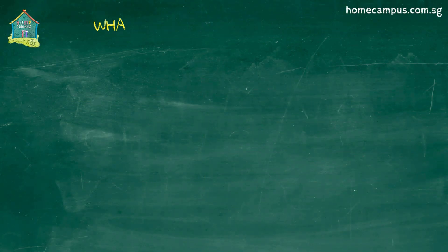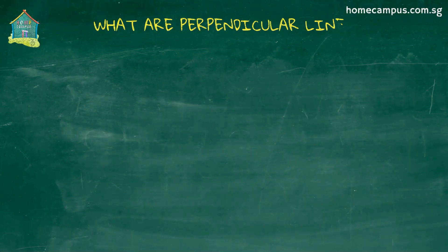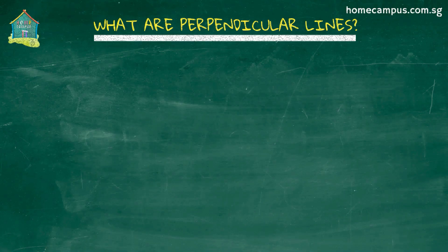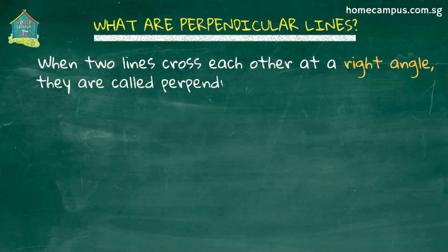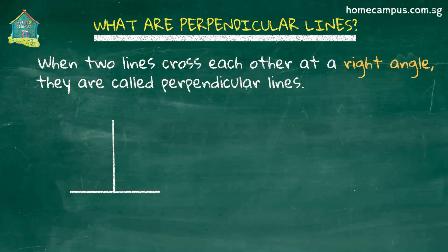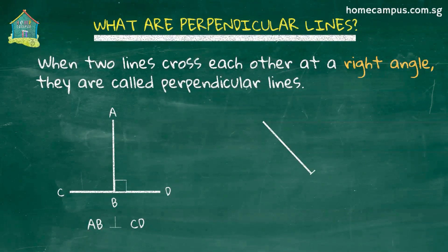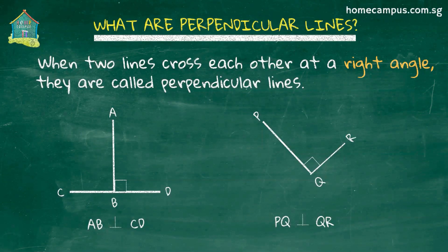Let's first see what perpendicular lines are. When two lines cross each other at a right angle, which means that they are at 90 degrees to each other, then they are called perpendicular lines. Here are some examples of perpendicular lines. In the first figure, AB is perpendicular to CD, and in the second figure, PQ is perpendicular to QR.